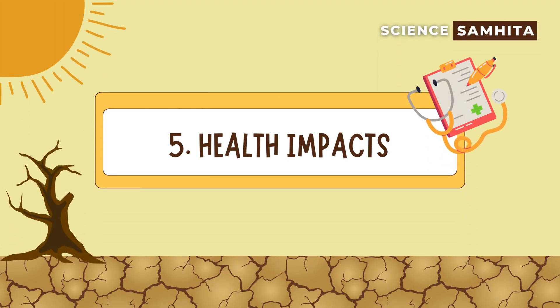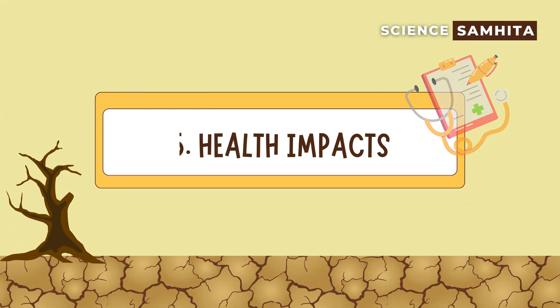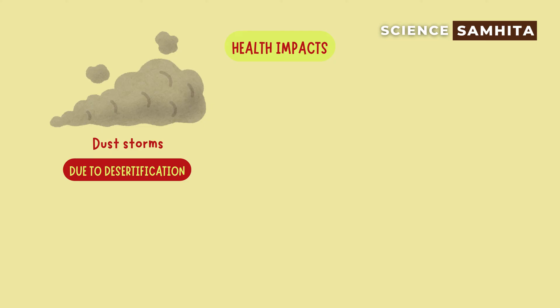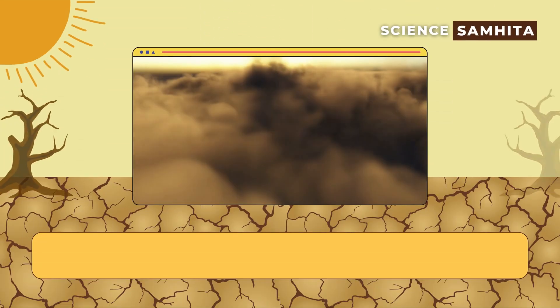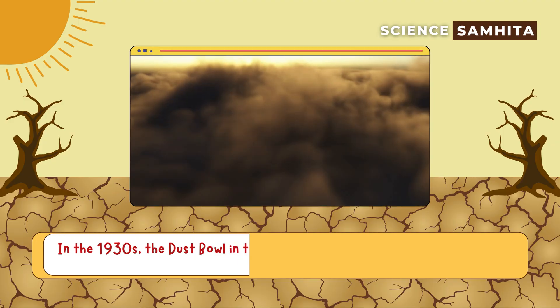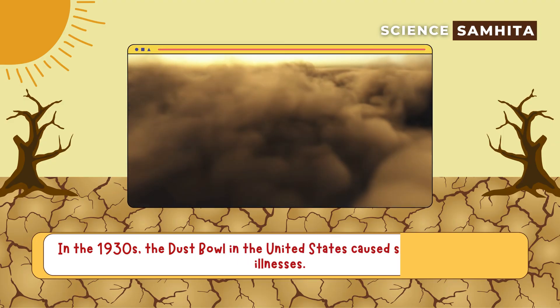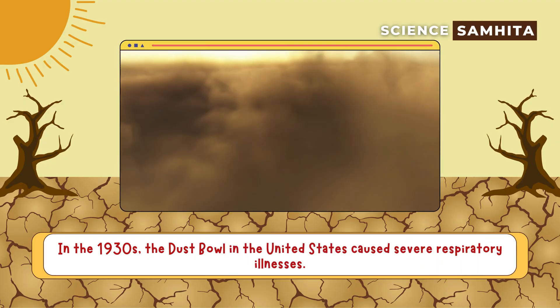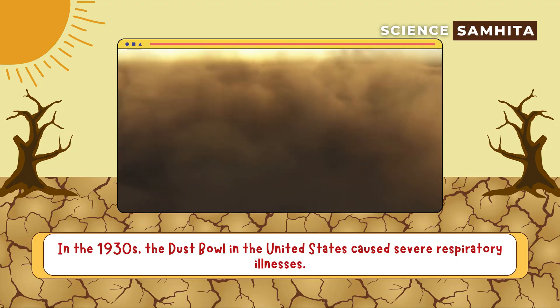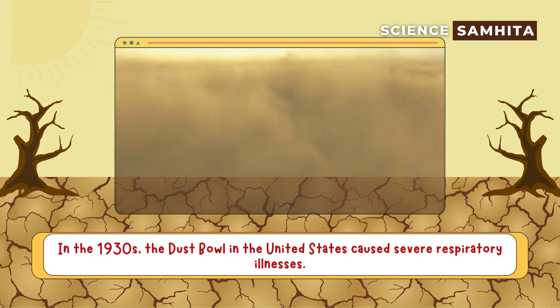Fifth, health impacts. Dust storms in degraded areas can lead to respiratory problems. For example, in the 1930s, the Dust Bowl in the United States caused severe respiratory illnesses.